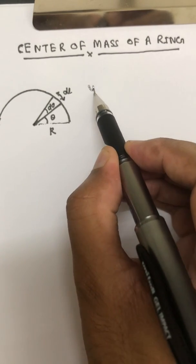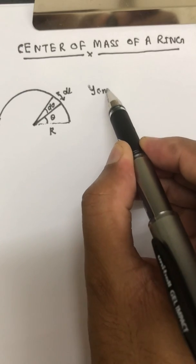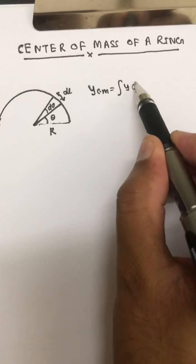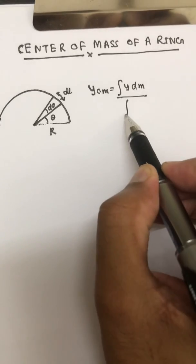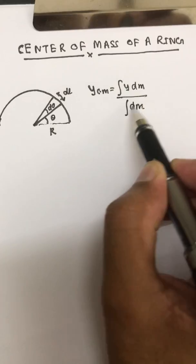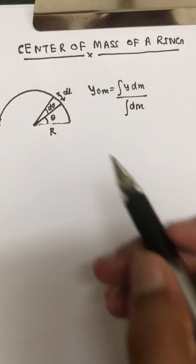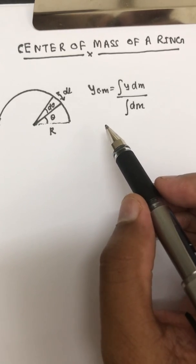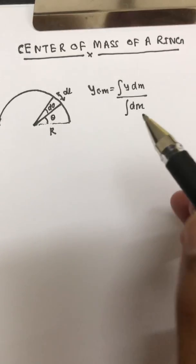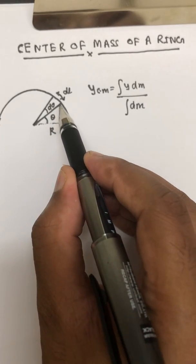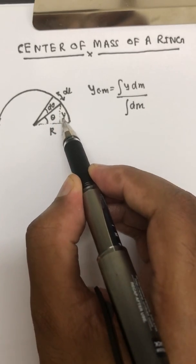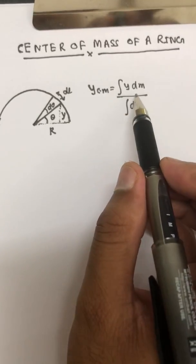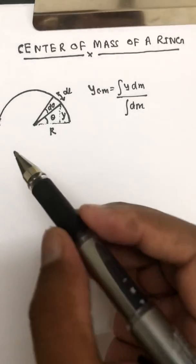We can use the formula: ycm = ∫y dm / ∫dm. xcm will be at zero only, because this is symmetrical about the x-axis. So we only need to find ycm: ycm = ∫y dm / ∫dm. Now I have to find y and dm, put them in this formula, integrate, and we'll get the center of mass of the semicircular ring.